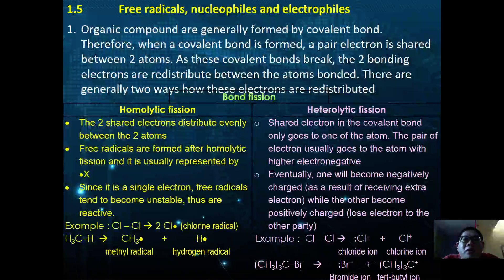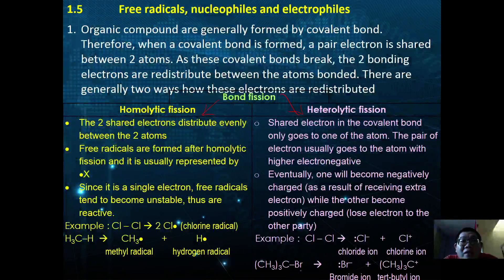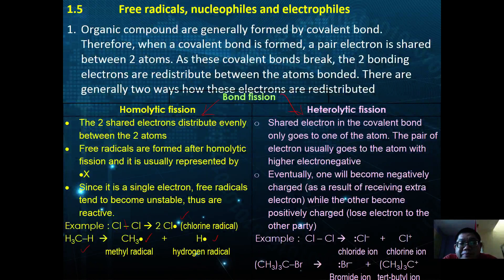When a covalent bond breaks, there are two types: homolytic fission and heterolytic fission. In homolytic fission, the two shared electrons are distributed evenly between the two atoms, forming free radicals each with a single unpaired electron. Free radicals tend to be unstable and reactive. For example, chlorine molecules dissociating homolytically form two chlorine radicals; HCl forms hydrogen and chlorine radicals.